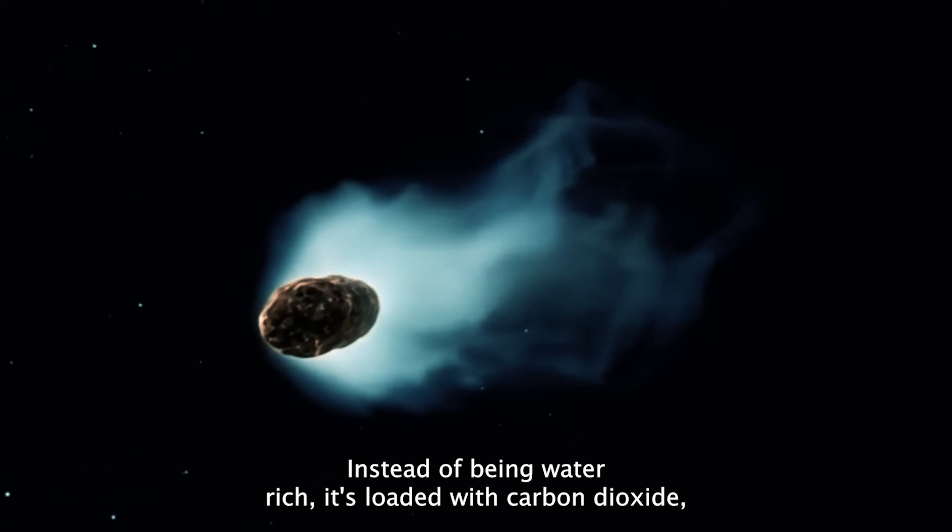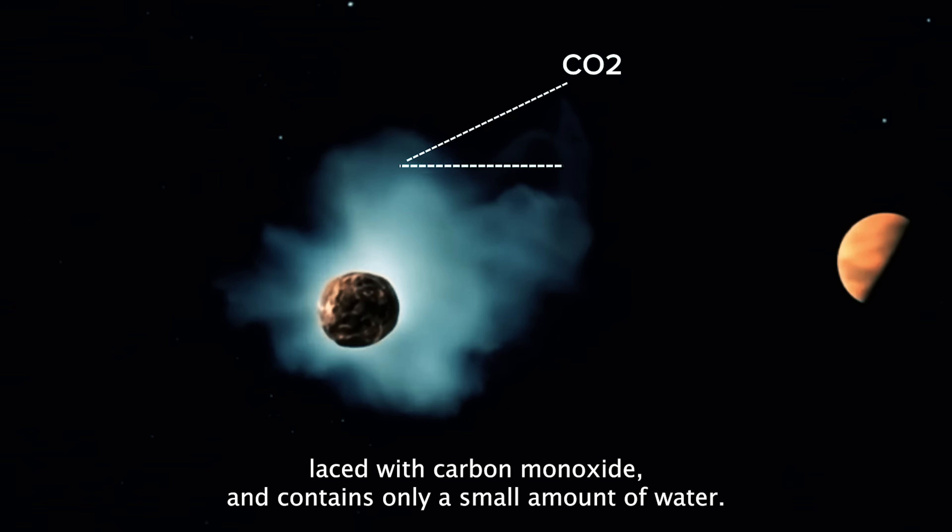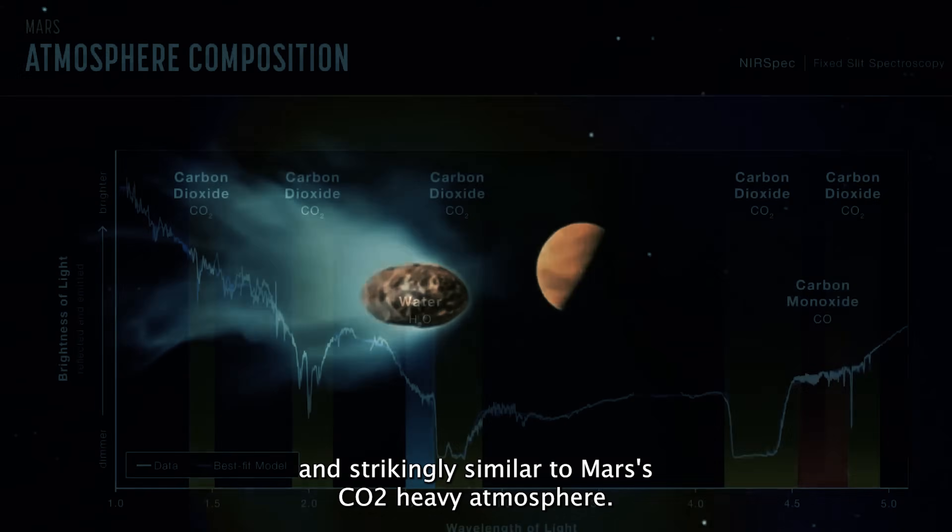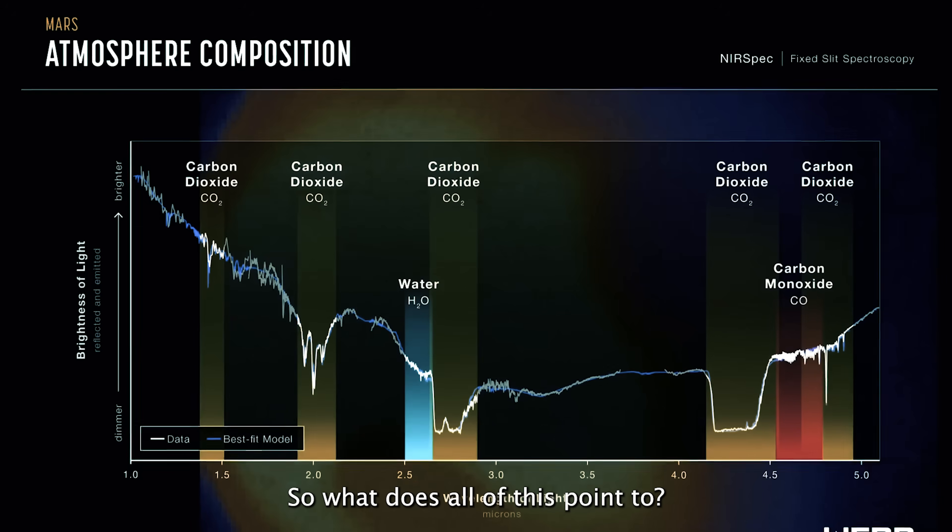Instead of being water-rich, it's loaded with carbon dioxide, laced with carbon monoxide, and contains only a small amount of water. This cocktail is extremely rare for a comet and strikingly similar to Mars' CO2-heavy atmosphere. So what does all of this point to?